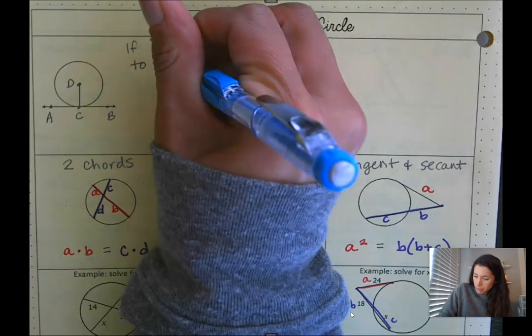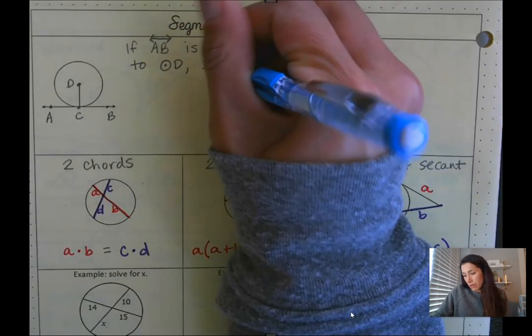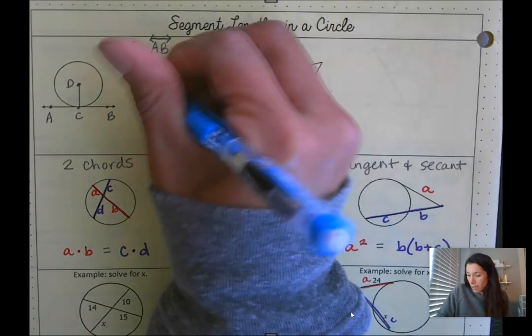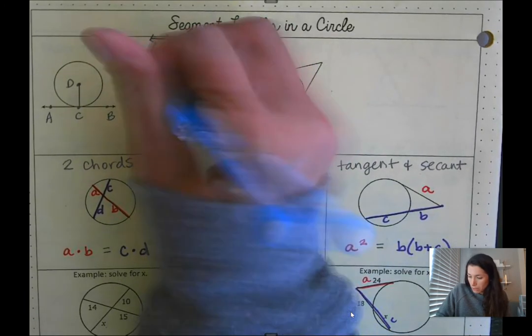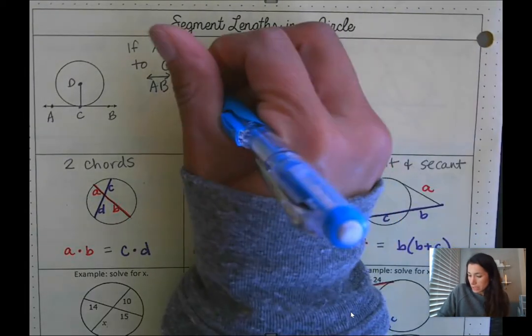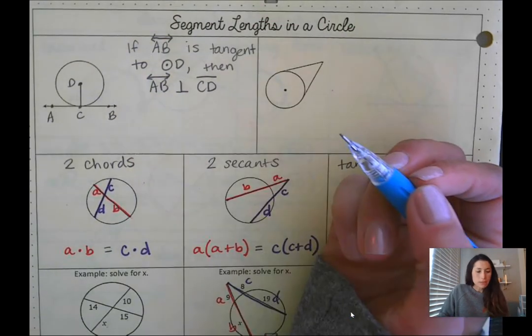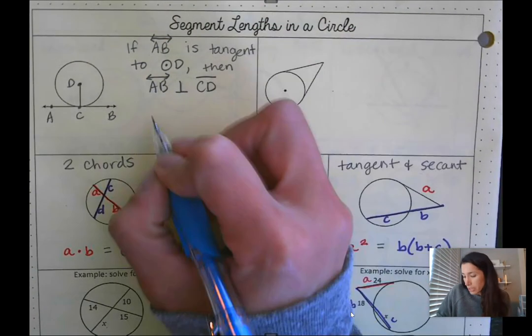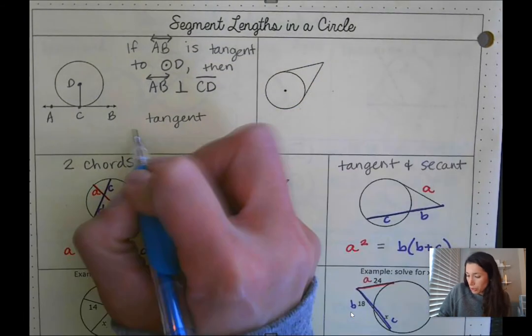And then just a reminder, a tangent intersects a circle at one point. So this right here would be our point of tangency.